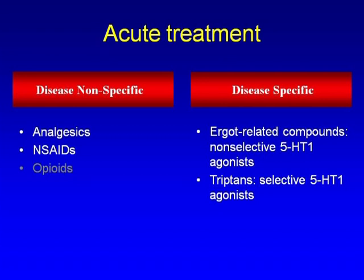Studies have shown that treating nausea in migraine can improve the headache itself. Some migraineurs find that vomiting actually relieves their headache. Reglan can be given IV in the ER because it also has antidopaminergic properties. I also use Compazine for some patients. Zofran anecdotally should help migraine due to its anti-serotonin properties on 5-HT3 receptors, but its potency is low compared to other agents, and insurance companies rarely approve it unless the patient has a cancer condition.